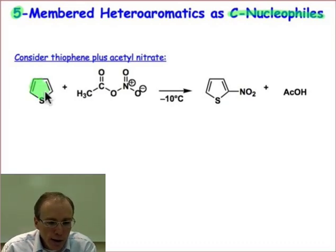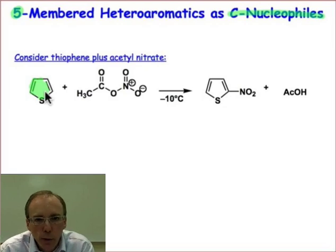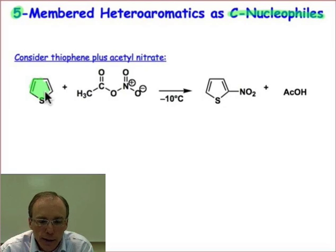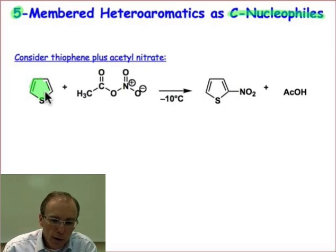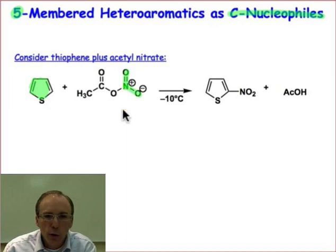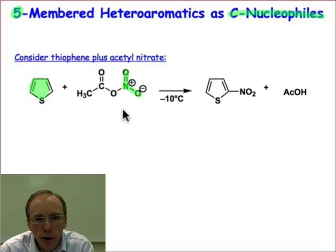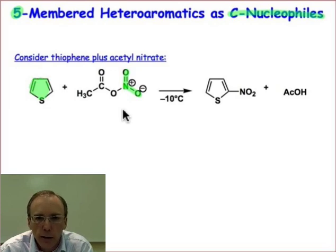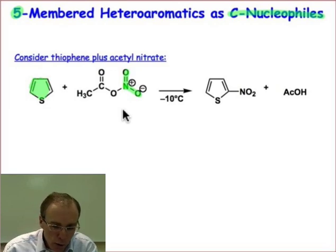We'll take as our prototypical five-membered ring reaction the reaction of thiophene with acetyl nitrate. Acetyl nitrate is just a good source of an electrophilic nitronium cation, but it's going to react in a slightly different mode of reactivity.